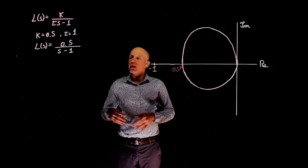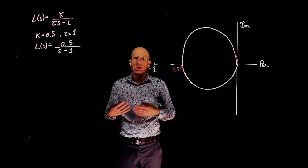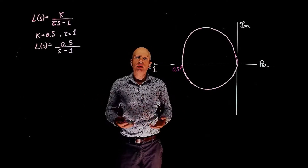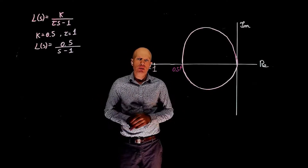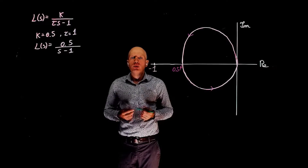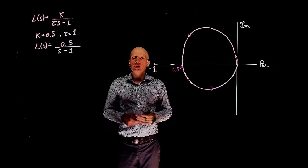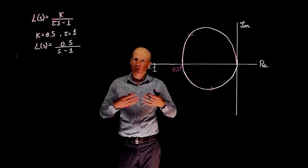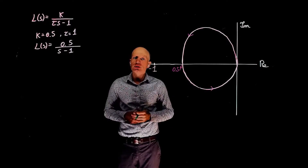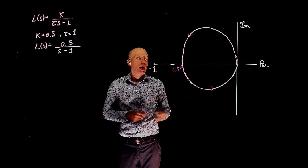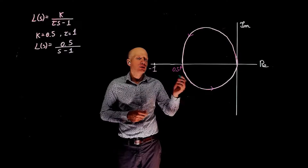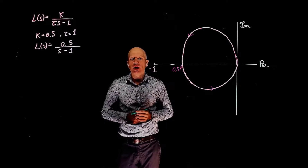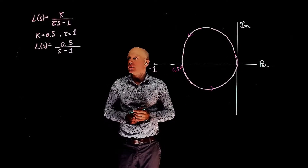The question is: is this system closed-loop stable or unstable? To answer that question, we need the number of unstable poles in the open-loop transfer function and the number of encirclements of negative 1 in the Nyquist plot.